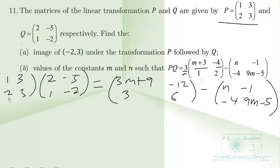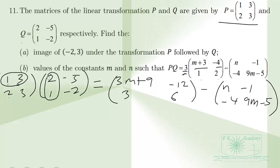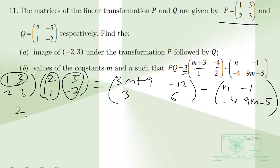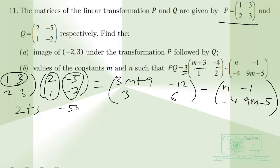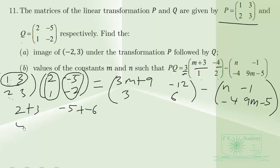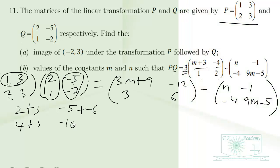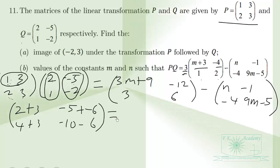To compute PQ, we multiply row by column. The first row of P takes the first column of Q: 1×2 + 3×1 = 5. First row, second column: 1×(-5) + 3×(-2) = -5 - 6 = -11. Second row, first column: 2×2 + 3×1 = 7. Second row, second column: 2×(-5) + 3×(-2) = -10 - 6 = -16.